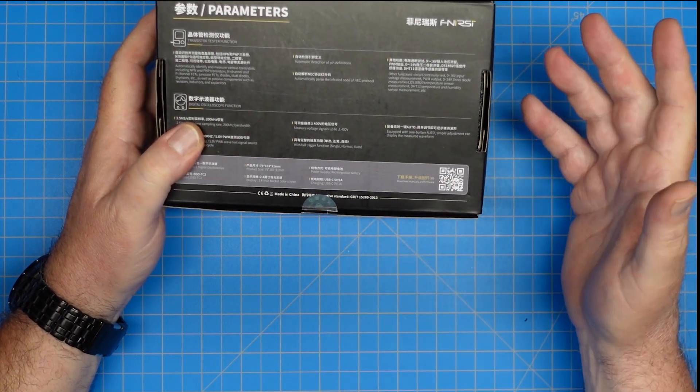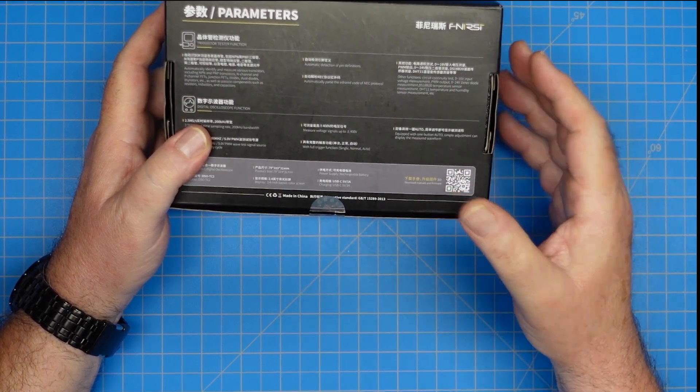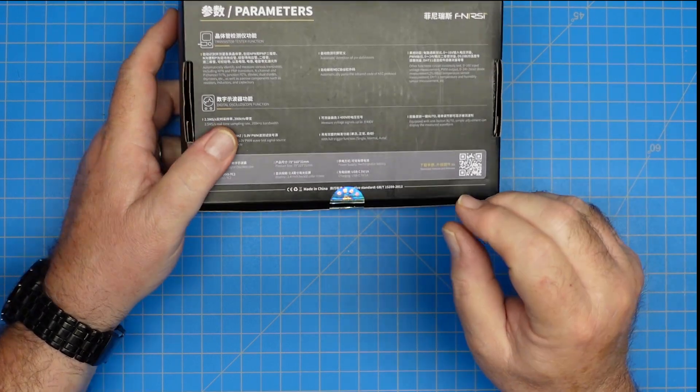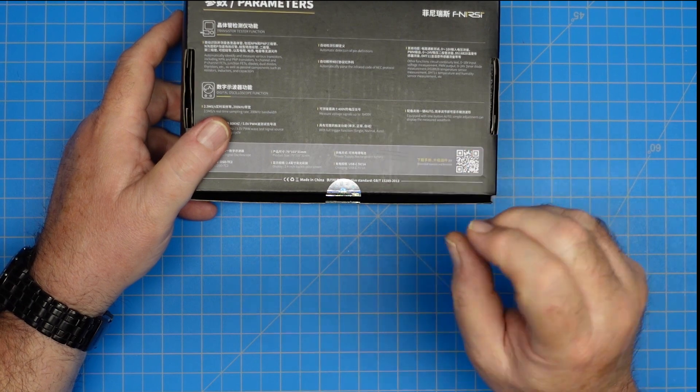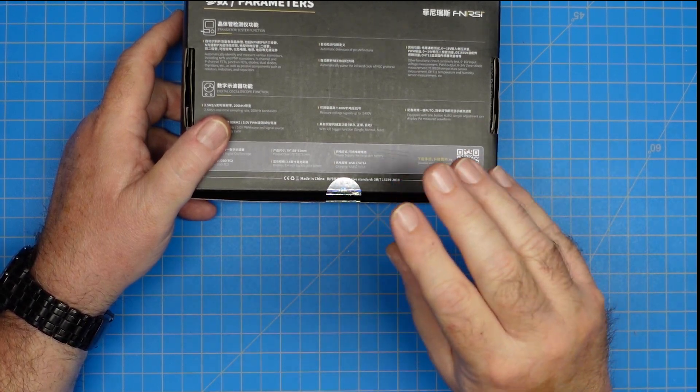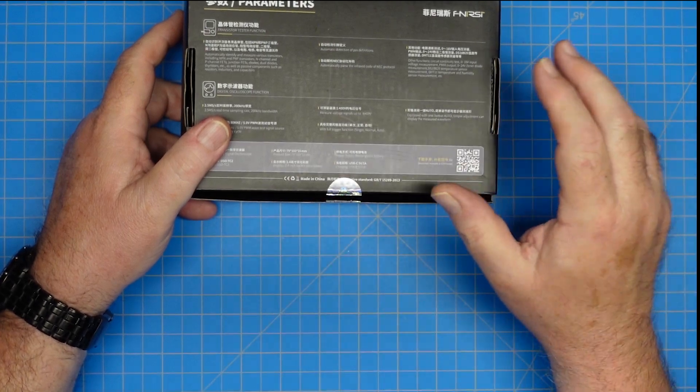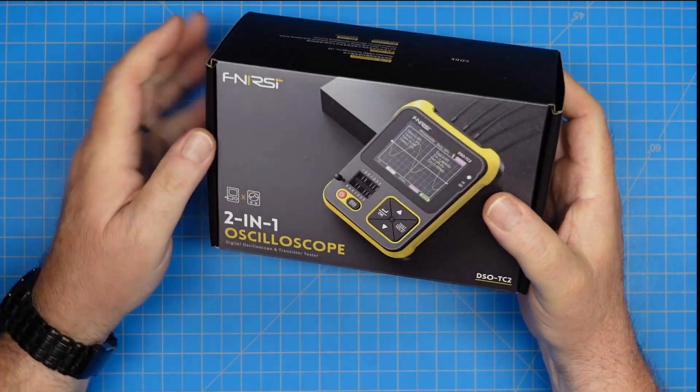It has an 80 kilohertz 5 volt PWM input generator. It will test voltage signals up to 400 volts through the oscilloscope function, not through the DC meter function. It has full triggering, auto, single, and run mode, just like a normal oscilloscope, as well as an auto function to where the scope will find the signal and get you at least in the ballpark.